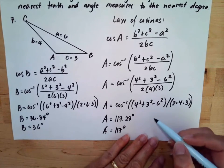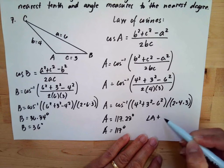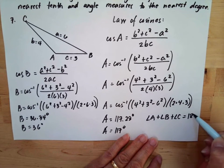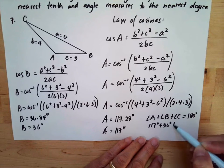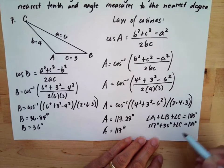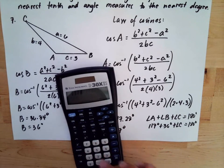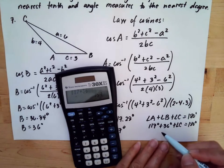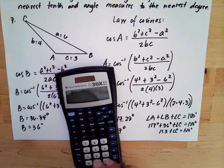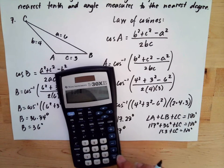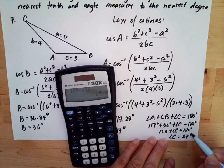For angle C, we use the fact that the sum of all angles inside a triangle equals 180 degrees. So angle A plus angle B plus angle C equals 180. Angle A is 117 and angle B is 36, so 117 plus 36 equals 153. Therefore, angle C equals 180 minus 153, which is 27 degrees.